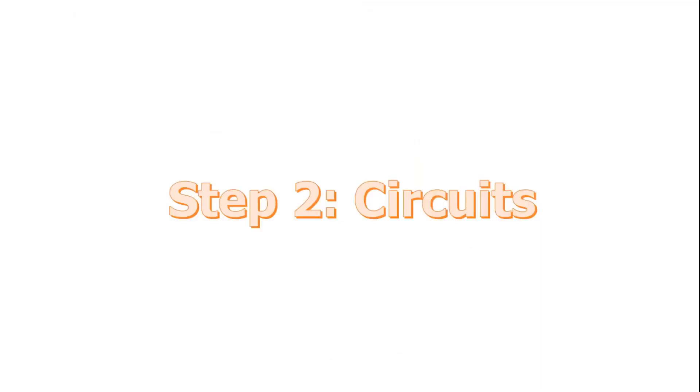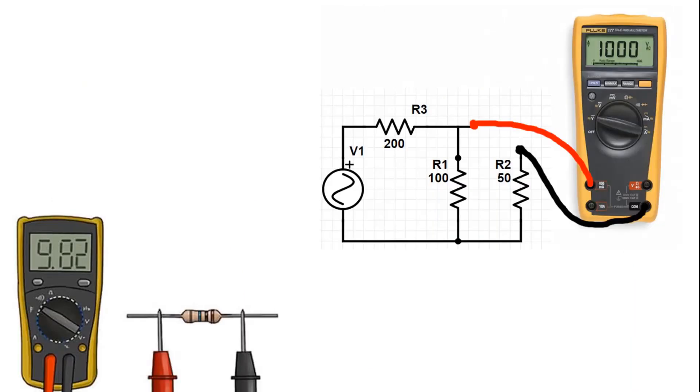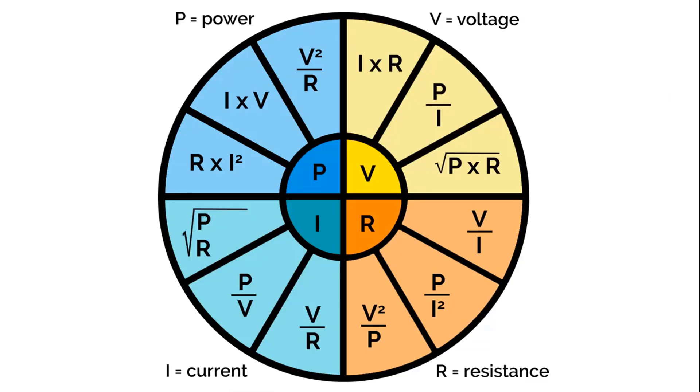Step 2: Circuits. A circuit is a complete and closed path through which electric current can flow. In other words, a closed circuit would allow the flow of electricity between power and ground. An open circuit would break the flow of electricity between power and ground. Anything that is part of this closed system, and that allows electricity to flow between power and ground, is considered to be part of the circuit.